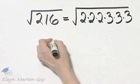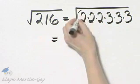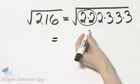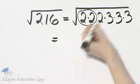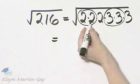Now that we've written 216 as a product of prime numbers, every square is a perfect square, and we can find the square root of it. So basically I'm circling every pair of prime numbers.